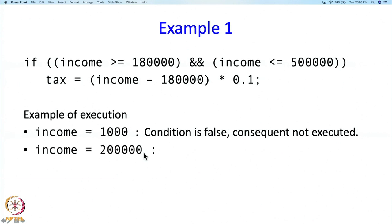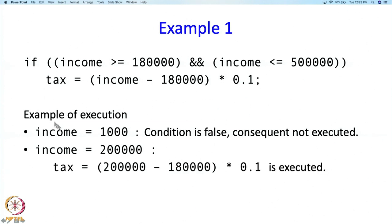Suppose income is 200,000. Is the first condition true? Yes — 200,000 is bigger than 180,000. We do not stop there; we need to check whether both are true. So we check: 200,000 is less than 500,000, so this condition is also true. As a result, the complete compound condition is true and the consequent executes. Tax = (200000 - 180000) * 0.1 = 20000 * 0.1, so the tax will be 2000.